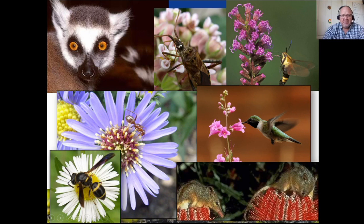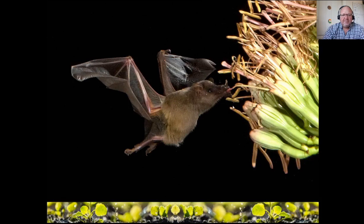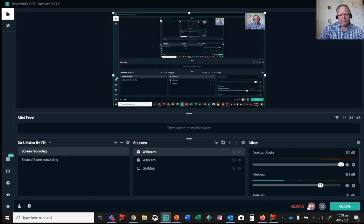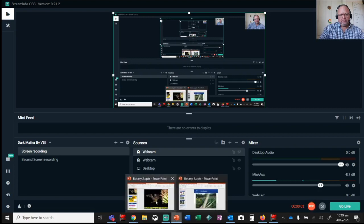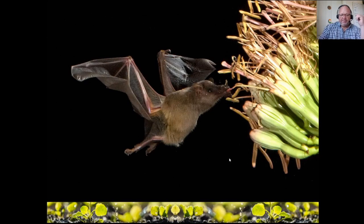Mice and other little rodents can go in after the nectar, then get pollen on them and transfer it to the next flower. Look at this amazing photo of a bat doing the same thing - you can see the anther, the filament, and the stigma. As he goes in he picks up some of the pollen and then flies to the next flower and deposits it. He's not doing this on purpose - he's just after food. That's why the plants need to reward them.